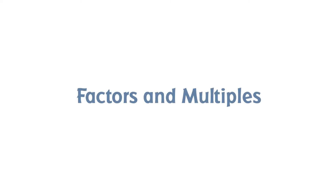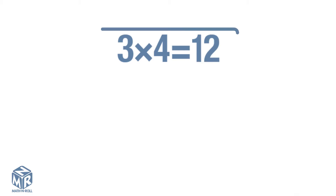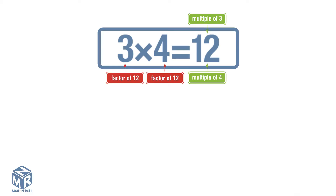Factors and multiples. How are factors and multiples related? The product of two numbers is a multiple of each number. 3 times 4 equals 12. 3 and 4 are factors of 12. 12 is a multiple of 3 and a multiple of 4.